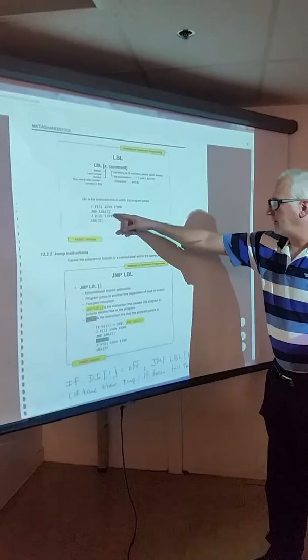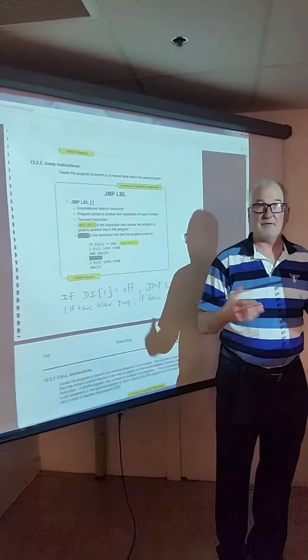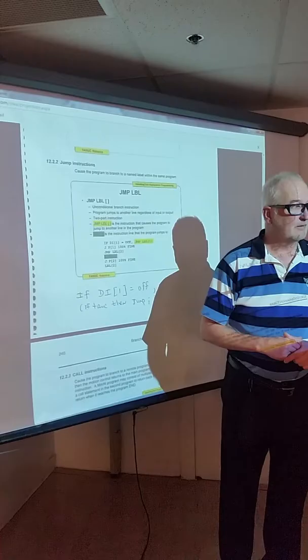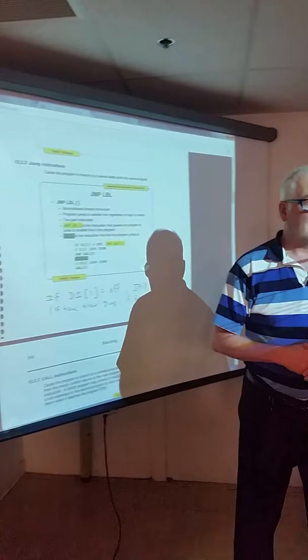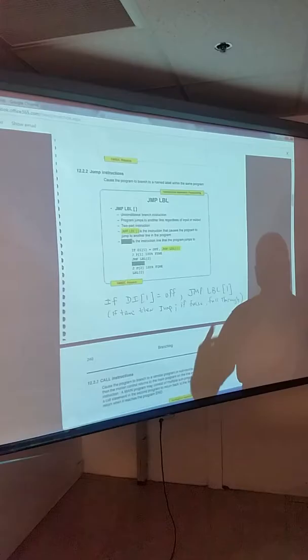Now, jump label, jump label here, what we've shown here... Unconditional branch instruction versus conditional. What's an example of a conditional branch instruction that we've used already? What's an example of a conditional? What instruction did we use? If, exactly.